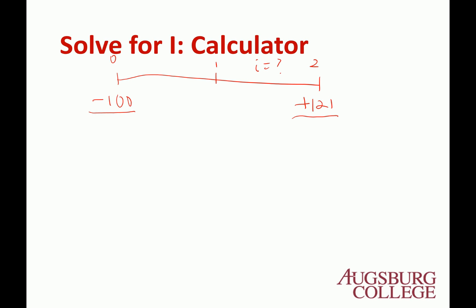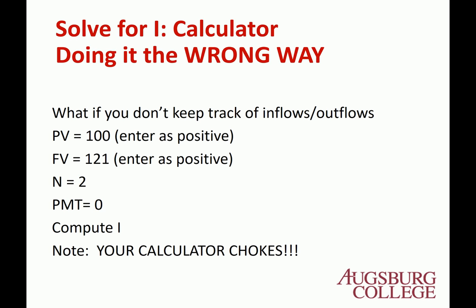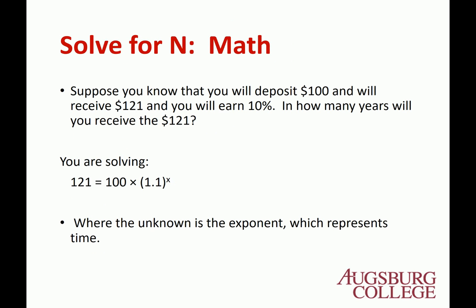Now let's solve for N. Suppose you know that you will deposit $100, will receive 121, you're going to make 10%, how many years will you receive 121 dollars?